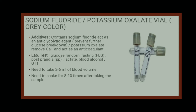The next vial is the sodium fluoride or potassium oxalate vial — gray color. It contains two additives: sodium fluoride, which acts as an anti-glycolytic agent that prevents glucose breakdown so we can determine the patient's glucose level; and potassium oxalate, which prevents calcium ion formation and acts as an anticoagulant. The lab tests we can do with this vial include random glucose, fasting glucose, post-prandial glucose, lactate, blood alcohol, and GTT (glucose tolerance test). We need 6 ml of blood and must shake it 8 to 10 times.